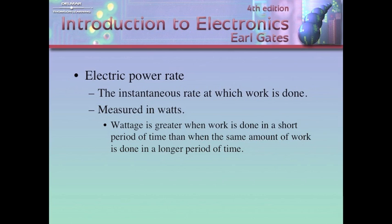The electrical power rate is the instantaneous rate at which work is done. It's measured in watts, named after James Watt, who basically developed this correlation between force causing motion, voltage being force, and electron flow, current being motion. Wattage is greater when work is done in a short period of time than when the same amount of work is done in a longer period of time.